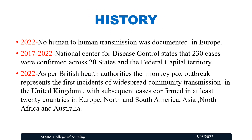In 2022, human-to-human transmission was documented in Europe. From 2017 to 2022, the National Center for Disease Control states that 230 cases were confirmed across 20 states and the federal capital territory. During 2020 to 2022, as per British health authorities, the monkeypox outbreak represented the first incidence of widespread community transmission in the United Kingdom, with subsequent cases confirmed in at least 20 countries in Europe, North and South America, Asia, North Africa, and Australia.